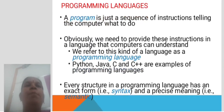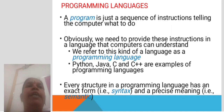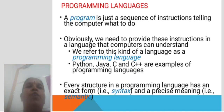A program is just a sequence of instructions telling the computer what to do. Obviously, we need to provide these instructions in a language that computers can understand. We refer to this kind of language as a programming language.